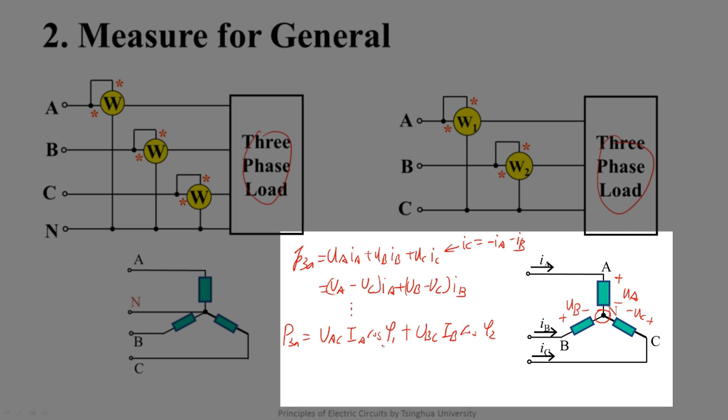Phi 1 is the phase difference of UAC and IA, and Phi 2 is the phase difference of UBC and IB. These are the expressions.